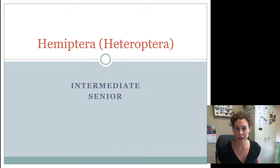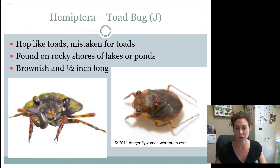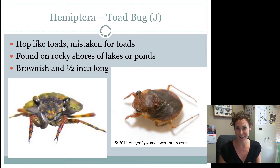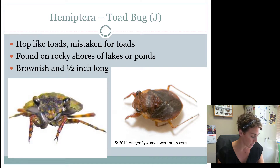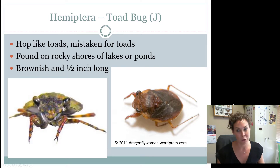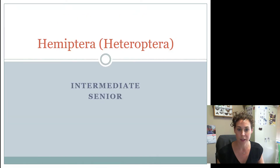That wraps up this presentation covering all the Hemipterans in the Heteroptera group that everybody needs to know. Juniors, after this one you don't need to watch the other Heteroptera presentations, but you do have insects in the Auchenorrhyncha and Sternorrhyncha groups you need to know. Intermediates and Seniors, come back to watch the other presentations on insects you need to know as more advanced 4-H'ers. Stay tuned for more information.